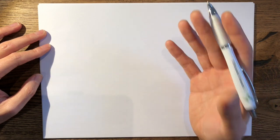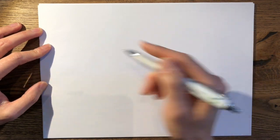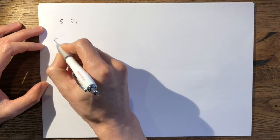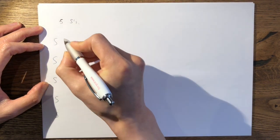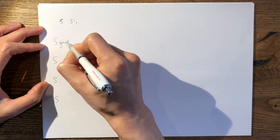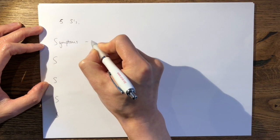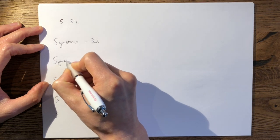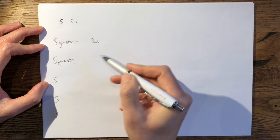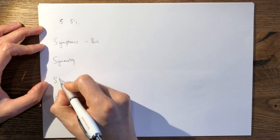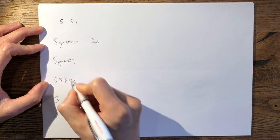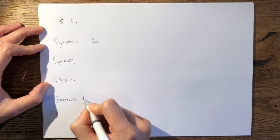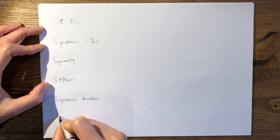And the five things that you should mention to the examiner that you'll be looking for are the five S's. The five S's can be described as symptoms, and that's usually that of pain. Symmetry, so whether the deformity is asymmetrical or symmetrical. Stiffness, is it associated with any systemic disorders or any syndromes?